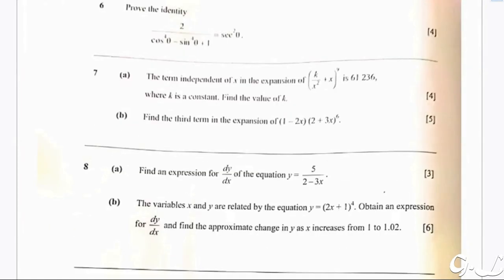The question says: Part A — find an expression for dy/dx for the equation y equals 5 over (2 minus 3x), carrying 3 marks. Part B — the variables x and y are related by the equation y equals (2x plus 1) to the power 4. Obtain an expression for the change in y as x increases from 1 to 1.02, carrying 6 marks.